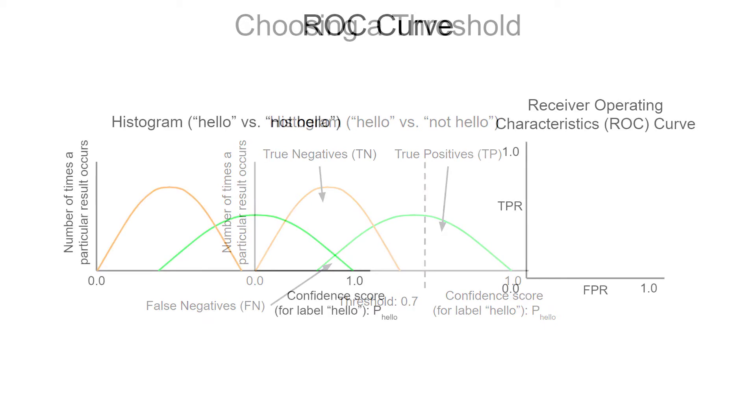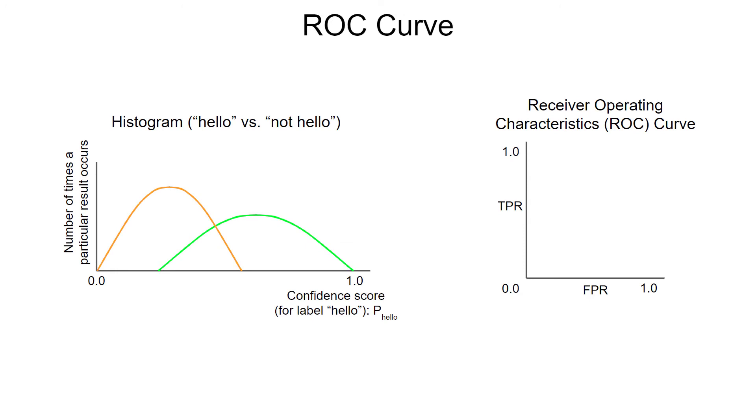Another way to view the effectiveness of this classifier is by constructing a receiver operating characteristics curve, or ROC curve. The x-axis is the false positive rate, and the y-axis is the true positive rate. We then slide an imaginary threshold over our histograms, computing the FPR and TPR at each threshold. At a threshold of 1, we won't have any true positives or false positives. This continues until a threshold of 0, where everything is a true positive or a false positive. The shape of this curve gives us an indication of the accuracy of our classifier.